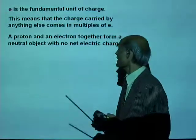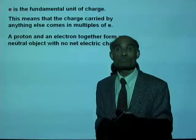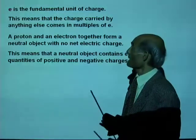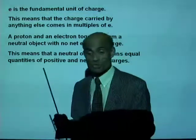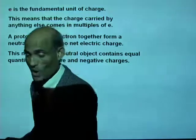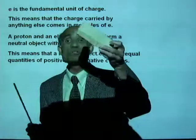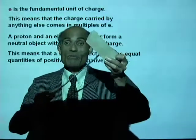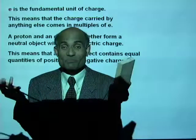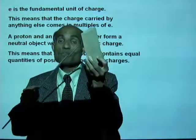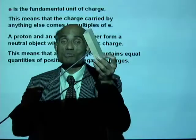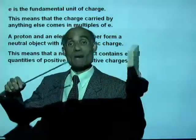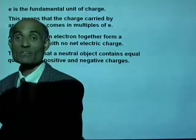A proton and an electron together form a neutral object with no net electric charge. When we say an object is neutral, it does not mean it contains no electric charges — everything in the universe is made up of electric charges. When we say an object is neutral, it means it contains equal numbers of positive and negative charges.